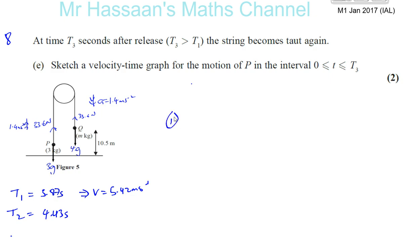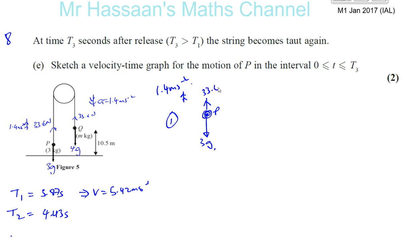So what's happened is: the first phase is when P was being pulled up by the string — upwards with an acceleration of 1.4 metres per second squared. The original speed was zero, and the speed it reached before Q hit the ground, while the tension was still in the string, was 5.42 metres per second, with a uniform acceleration of 1.4 metres per second squared.